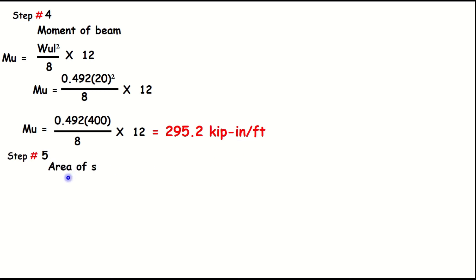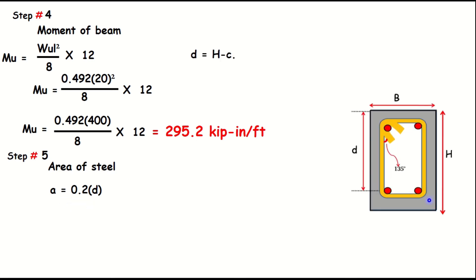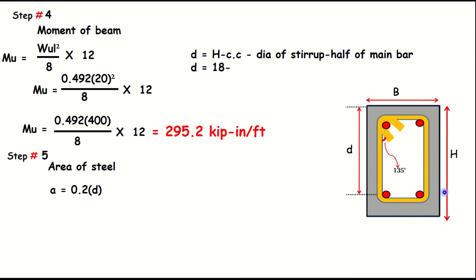Step number five: find the area of steel. First, assume the depth of the stress block A = 0.2 multiplied by d. The effective depth d equals the height of the beam minus concrete cover, minus diameter of stirrup, minus half the diameter of the main bar. So d = 18 minus 1.5 (concrete cover) minus 3/8 (stirrup diameter) minus 1/2 (half of main bar diameter), giving an effective depth d.